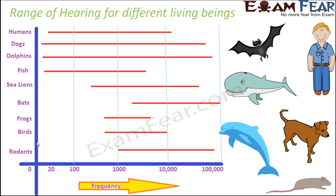Let us look at the range of frequencies for some different organisms — humans, dogs, dolphins, fish, sea lions, bats, frogs, birds, and rodents. On the x-axis are frequencies in hertz. For human beings, the range is from 20 hertz to 20,000 hertz. For dogs, the frequency range of hearing is even greater than human beings, so dogs can hear frequencies which fall in our inaudible range. Dolphins and dogs have almost the same range of hearing. Fish have a different range. So whatever sounds we are able to hear, there are many other sounds that exist which fall in our inaudible range.